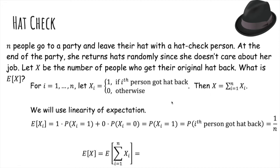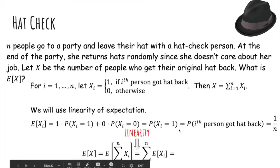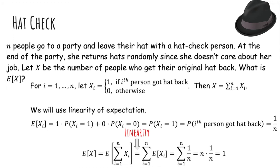So the expected value of x is the expected value of the sum of these xi's. And by linearity of expectation, we can break it into the sum of the expected values. And since each is the same, we get a sum of n copies of one over n, which just turns out to be n times one over n or one. So that's really cool.